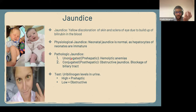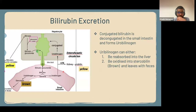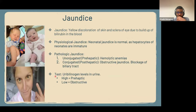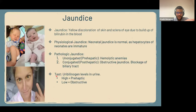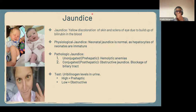This is a very high yield topic for the exam. To test for the type of jaundice, we test urobilinogen levels in the urine. If urobilinogen is high, that means we have prehepatic or unconjugated jaundice, because there's more deconjugated bilirubin. If it's low, then we have obstructive or posthepatic jaundice, because most of the bilirubin is conjugated and you won't have high levels of unconjugated bilirubin in the urine.